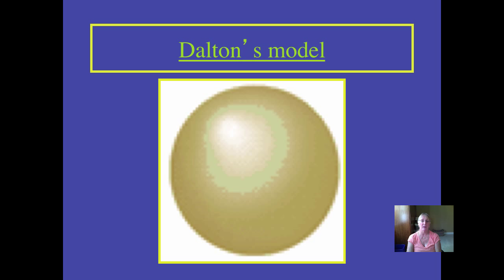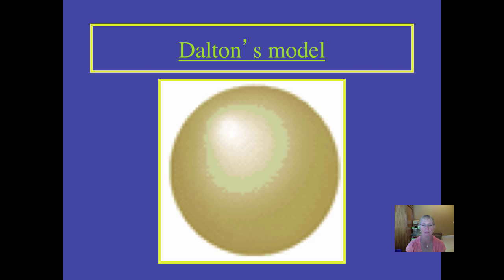Dalton's model, if you were to draw a picture of it, envisioned the atom as something like a solid sphere — like a little BB. You will be asked on a future quiz or test to reproduce the basic models of the atom discussed so far. His model can be visualized simply as a solid BB.